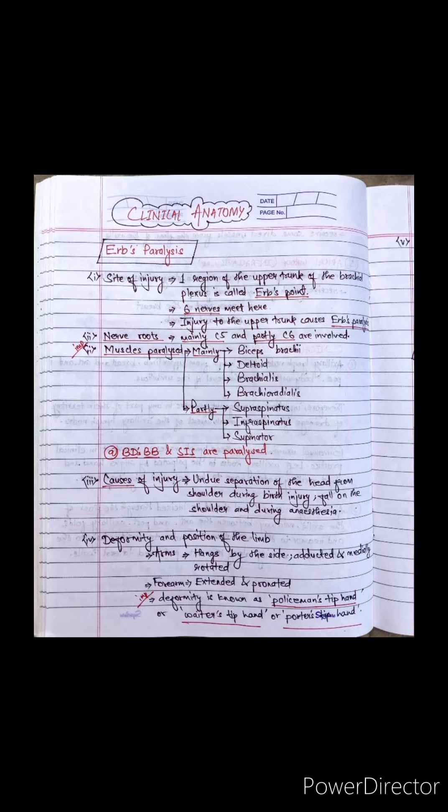We can remember using the mnemonic BD's BBSIS are paralyzed: B for biceps brachii, D for deltoid, B for brachialis, B for brachioradialis, S for supraspinatus, I for infraspinatus, and S for supinator. Now let's see the causes of injury.